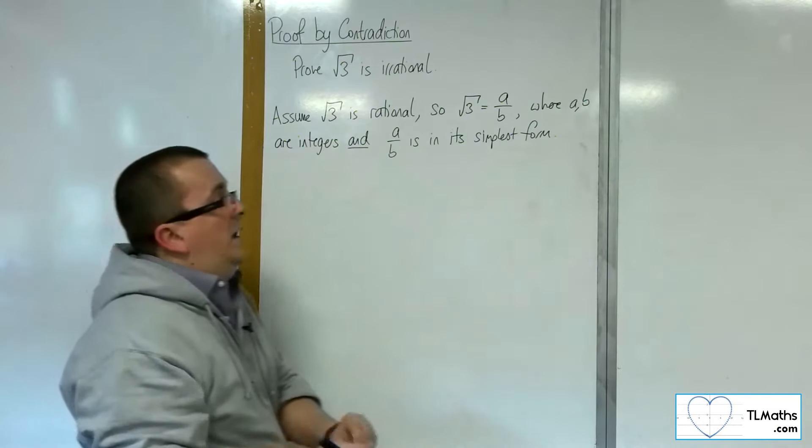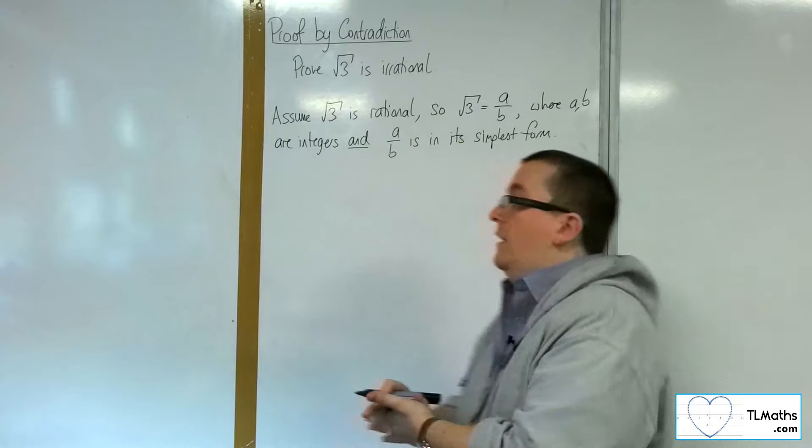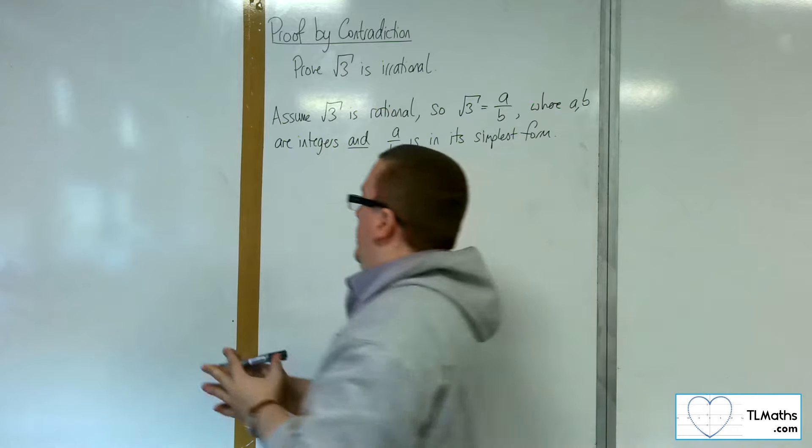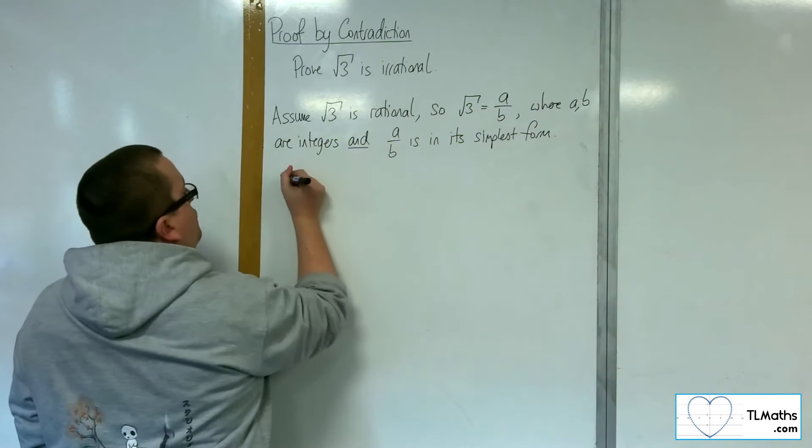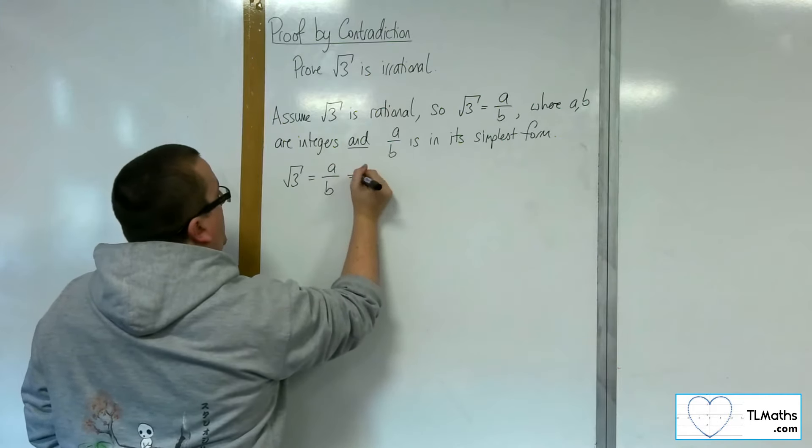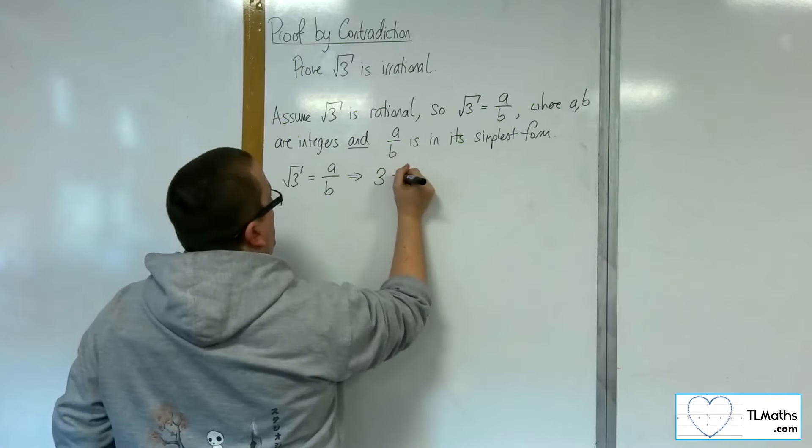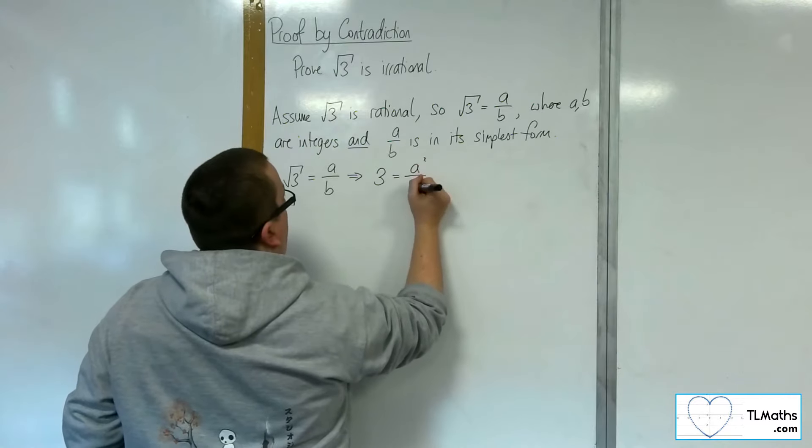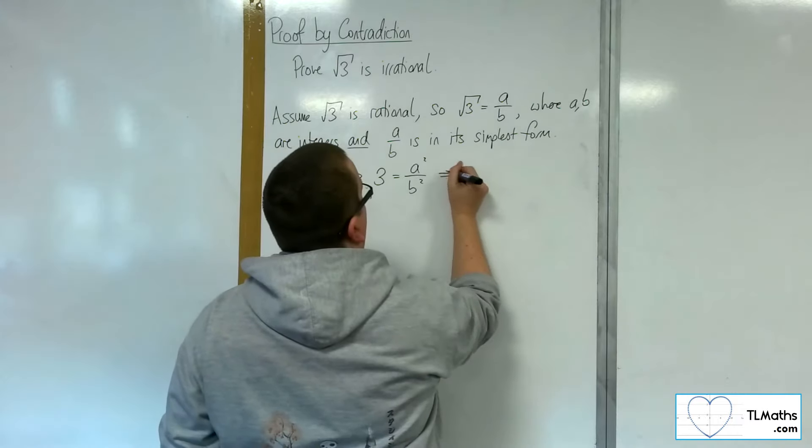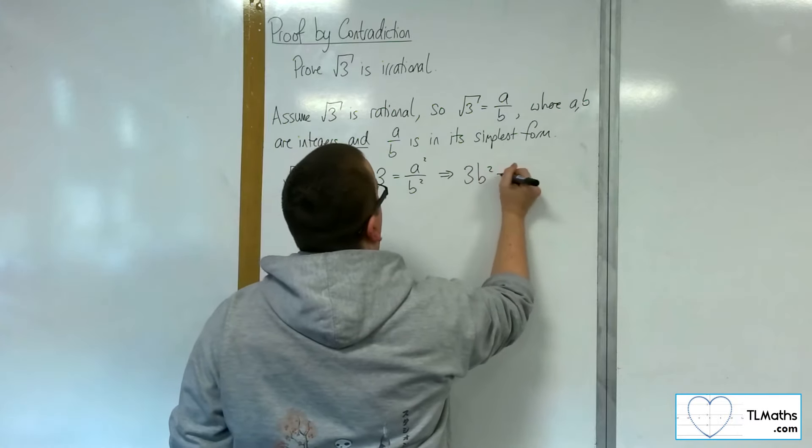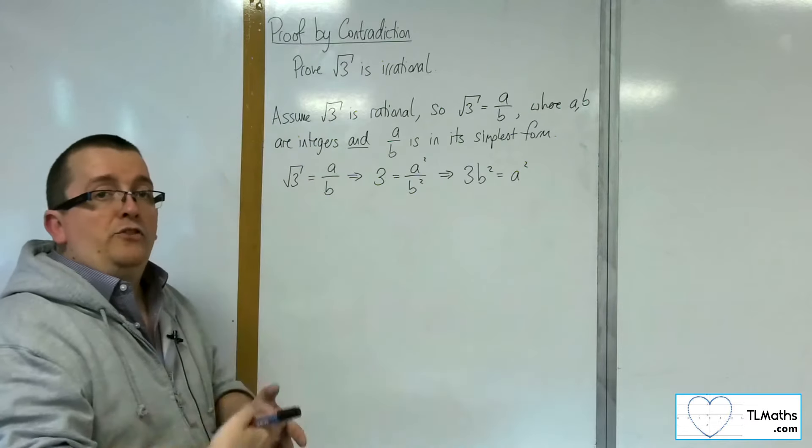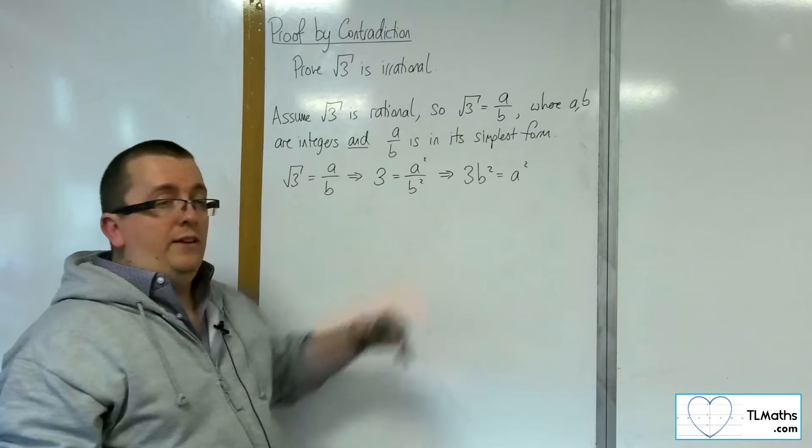So a over b isn't 3 over 6 or anything like that, it is a fraction that cannot be simplified. Now, if root 3 is equal to a over b, then we can square both sides, just as we did with the proof that root 2 is irrational. You can then multiply it by the b squared, so 3b squared is equal to a squared. So that means that a squared is divisible by 3, because 3 is a factor of the a squared.